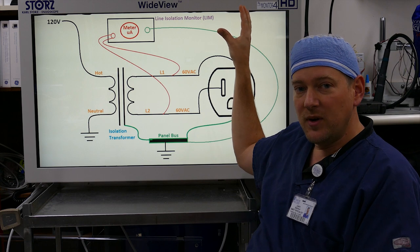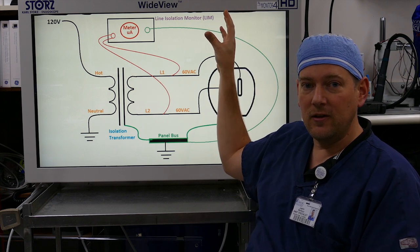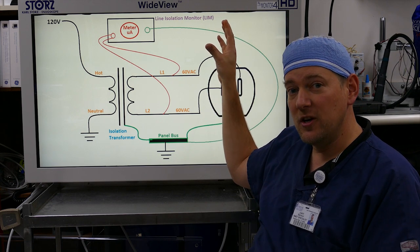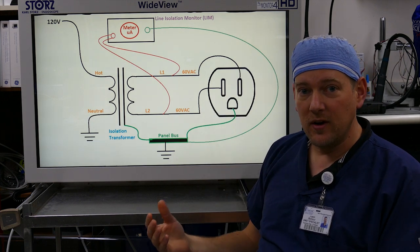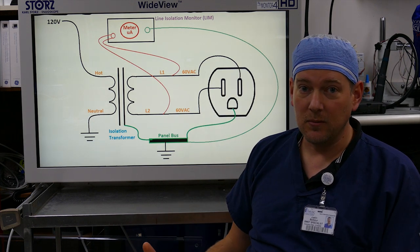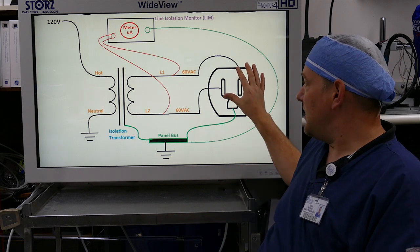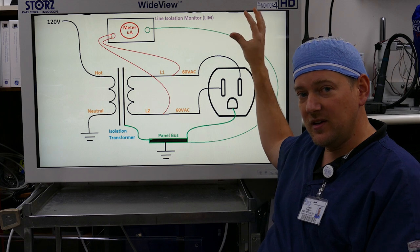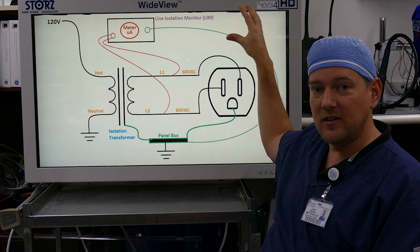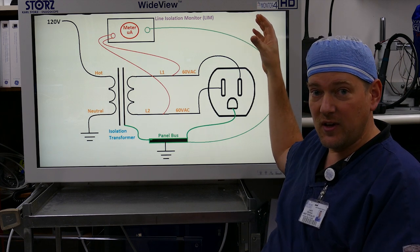Now this is pretty similar to a GFI that you find at your house, except a GFI will disconnect the circuit and of course there's no way you want a circuit disconnected in an operating room. So all this will do is there's going to be a buzzer on the alarm with a flashing light. It'll buzz inside the operating room allowing the staff to see that there is a potential hazard someplace.